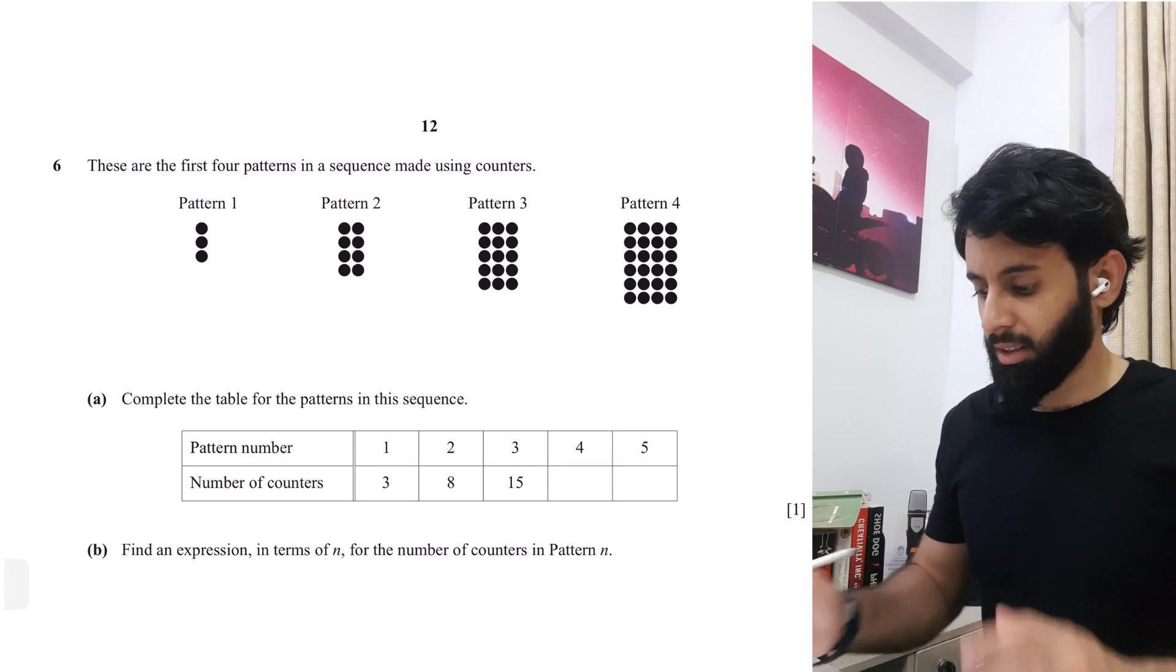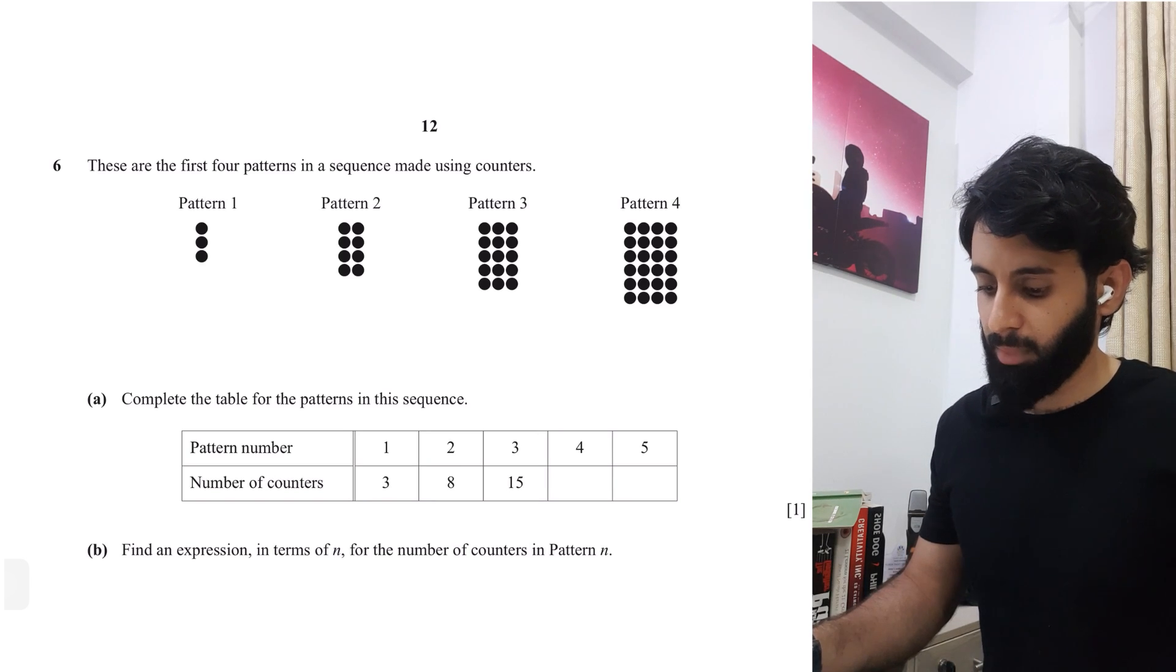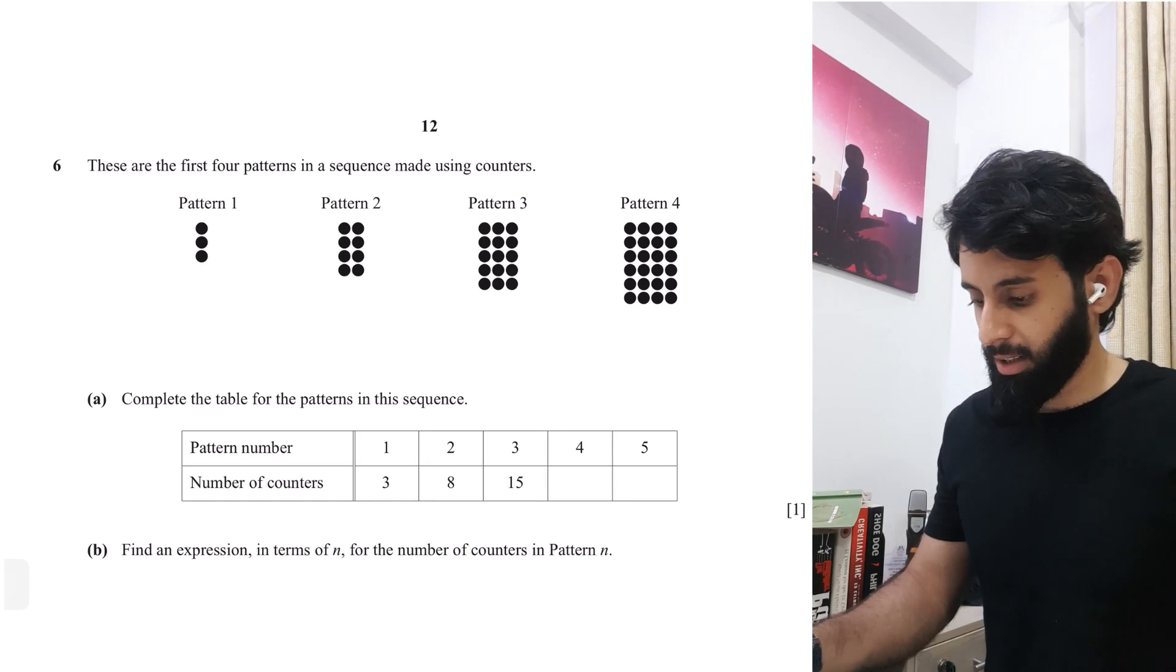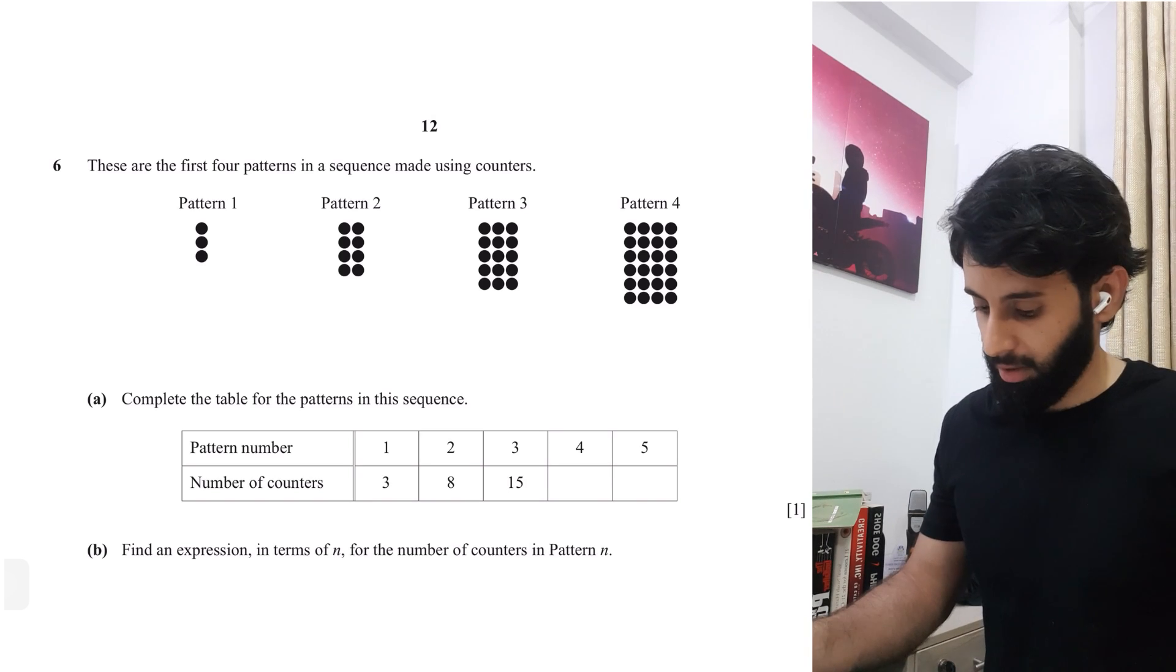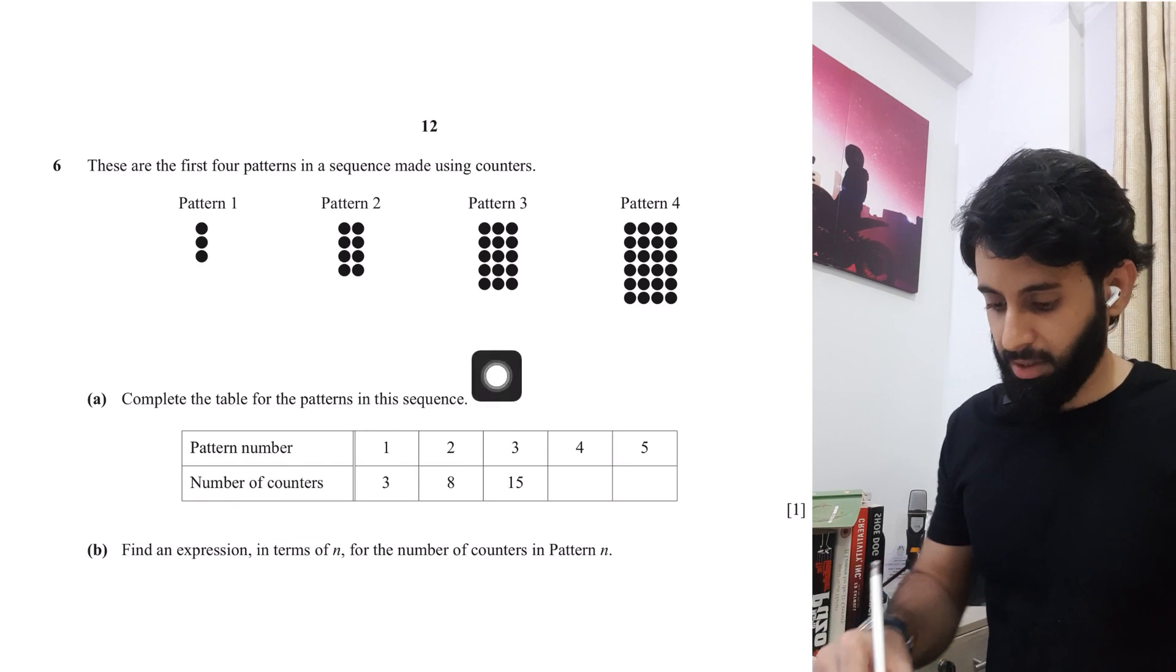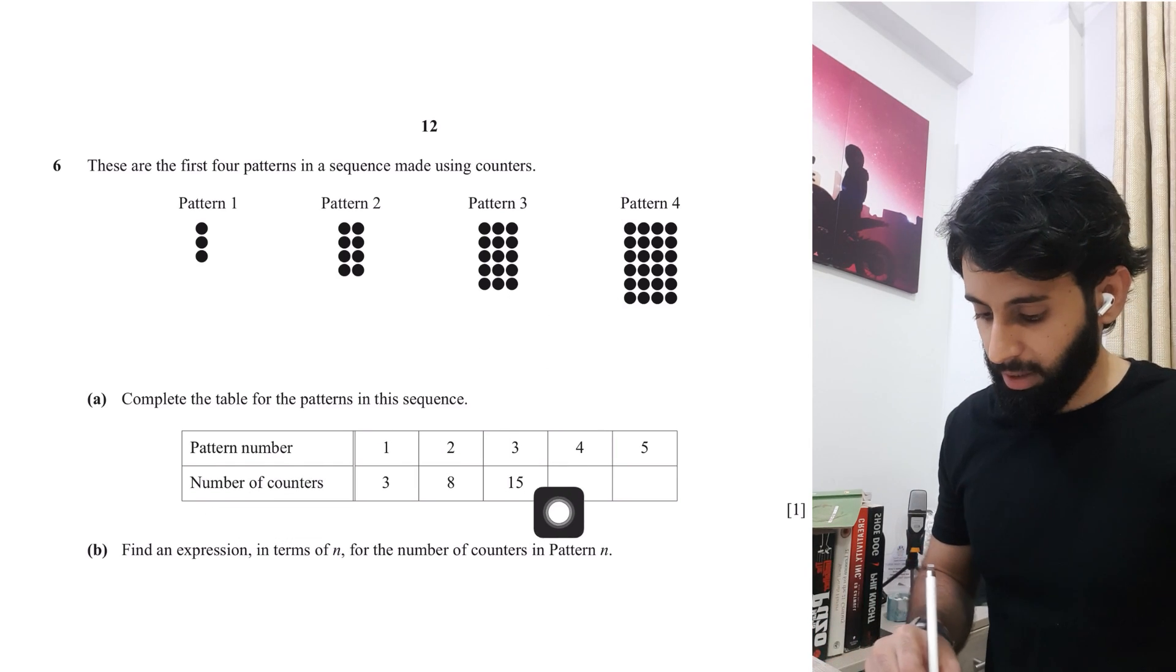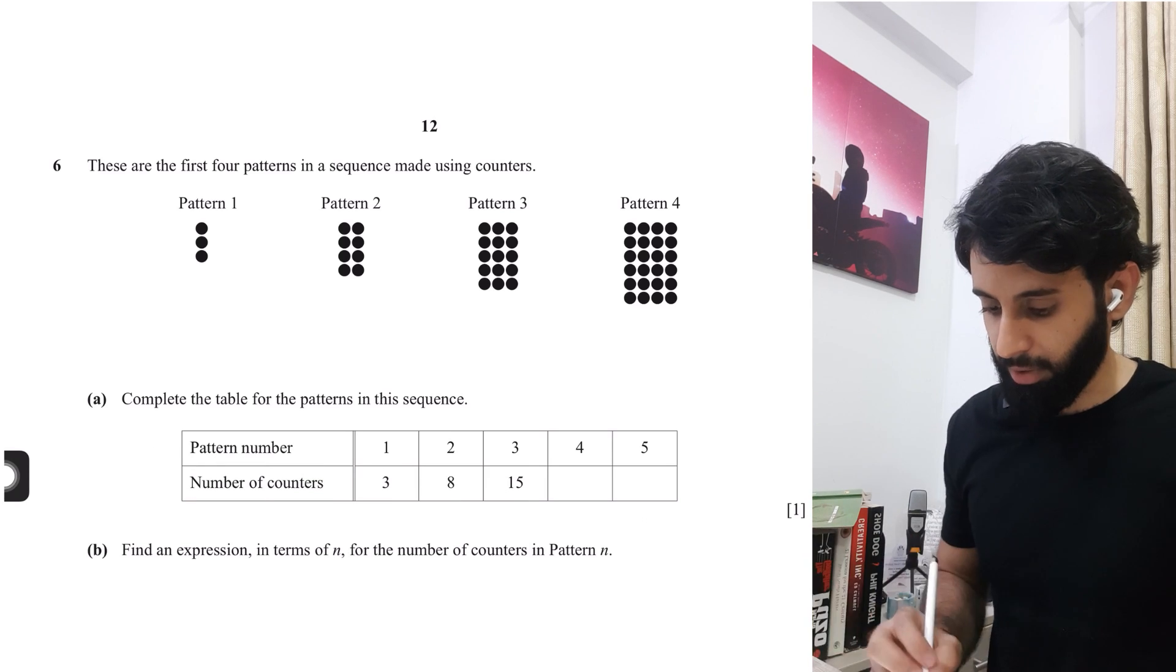So it says here, these are the first four patterns in a sequence made using counters. Okay. So we can see that pattern number one has three counters, pattern number two has eight, pattern number three has 15. And now we have to write the number of counters in pattern four, which we can simply count and do it. And then following the pattern, we have to write down the number of counters that we will have in pattern number five.